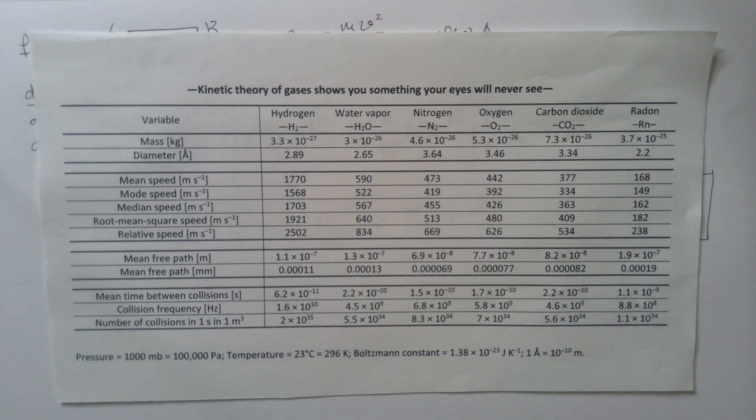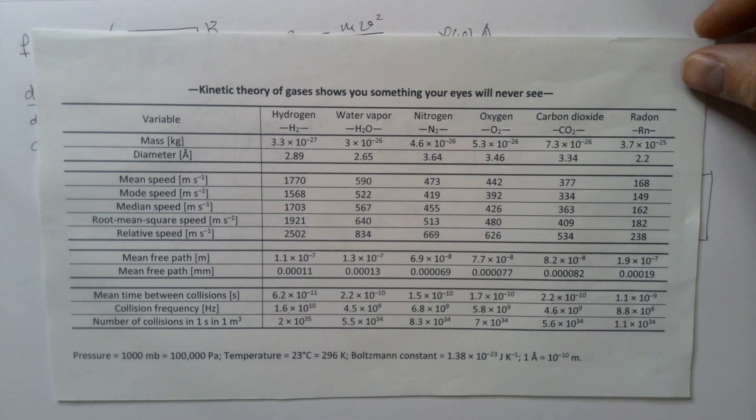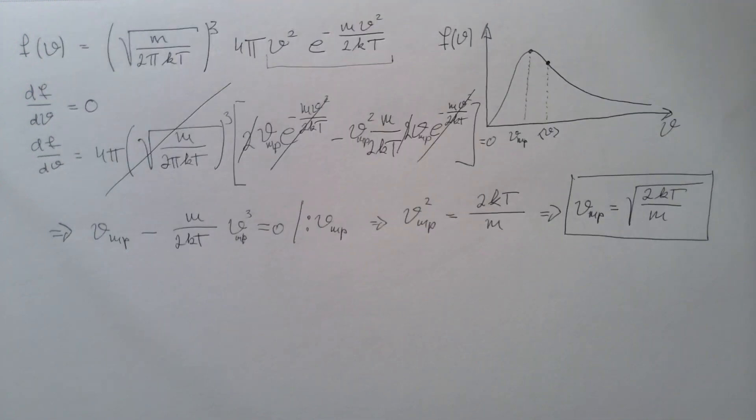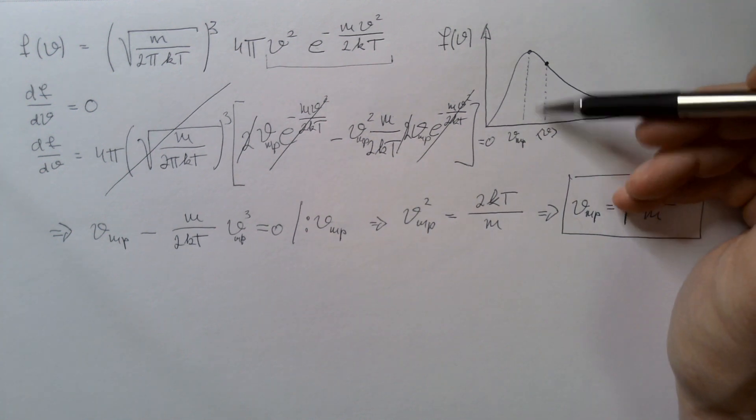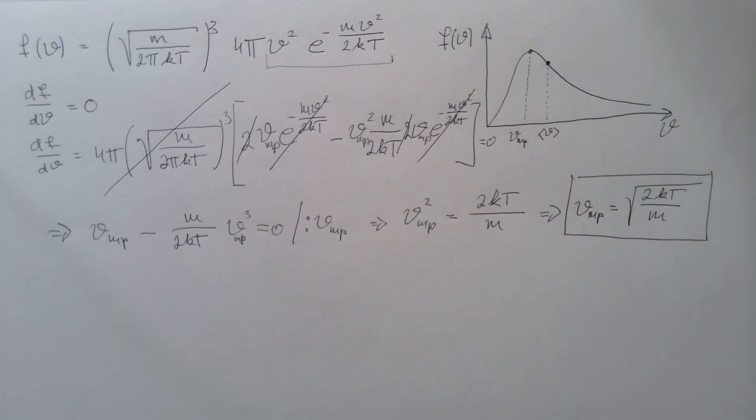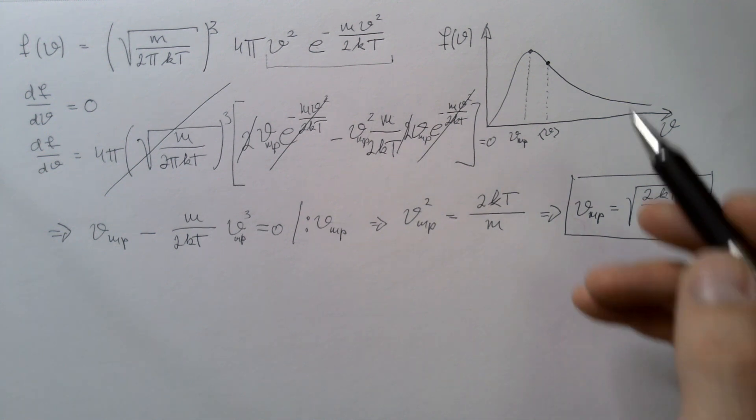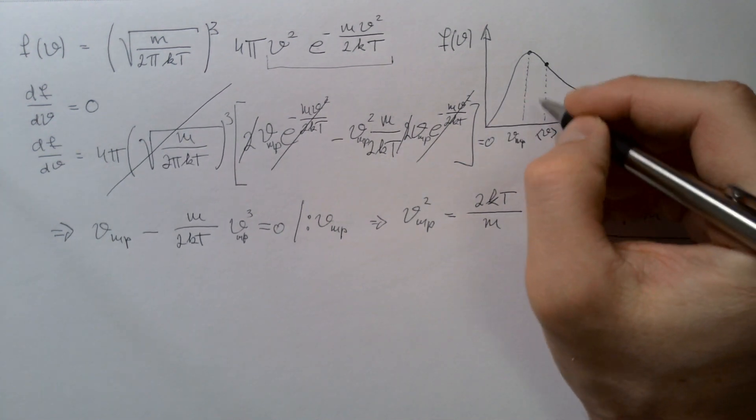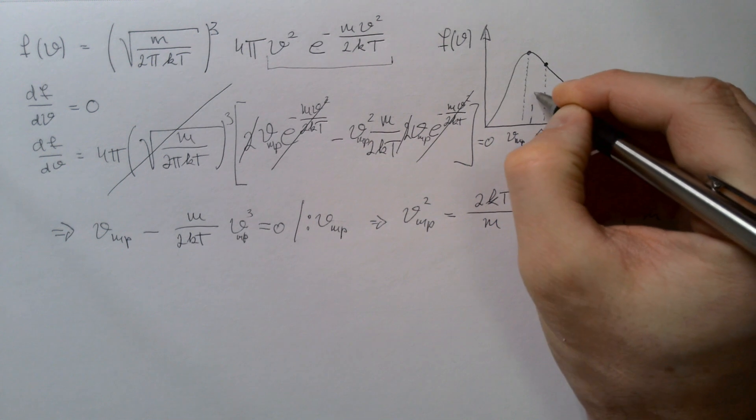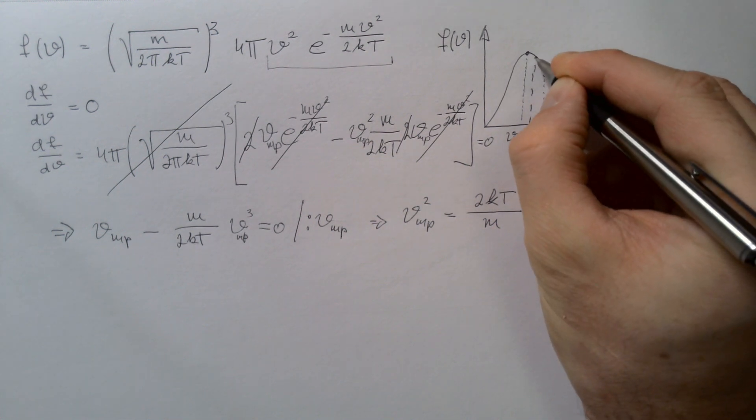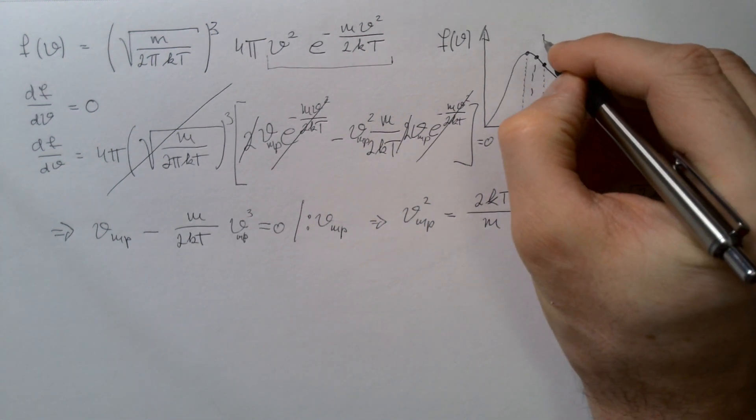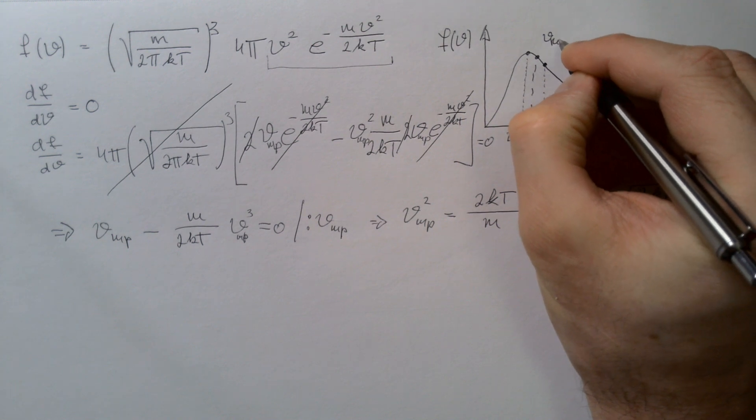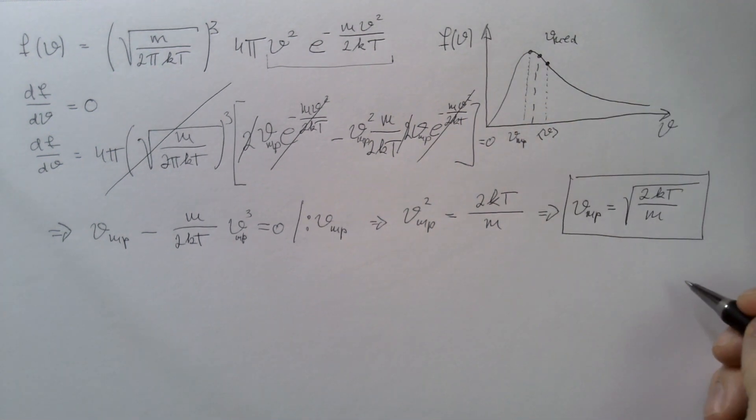Notice that this table also gives us the so-called median speed. Let us now discuss what median speed is. If we go back to our plot of the Maxwell-Boltzmann distribution, there is a speed on this graph that separates the area under the graph in two equal parts. And that speed is somewhere here, qualitatively, and I will call it V-MED, median speed.